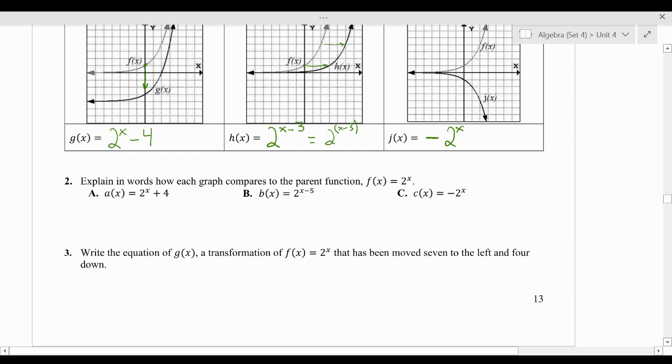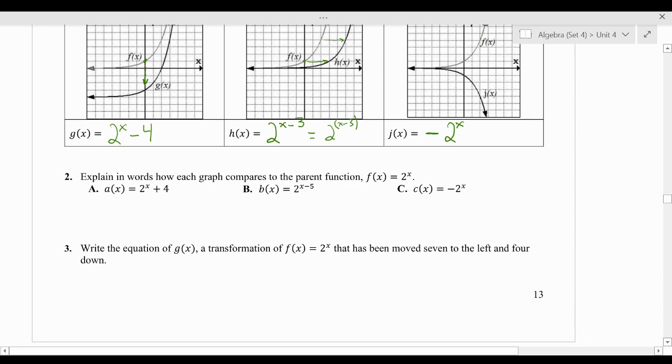Now, let's put it into words from when they give us an equation. So it says, explain in words how each graph compares to the parent function f of x equals 2 to the power of x. So a of x is 2 to the power of x plus 4. So that means that f of x moves up by 4. f of x moves up by 4. Not too bad.